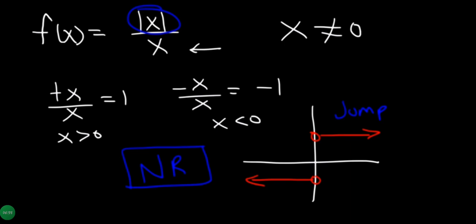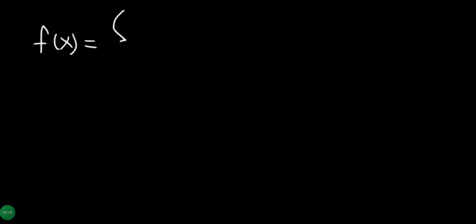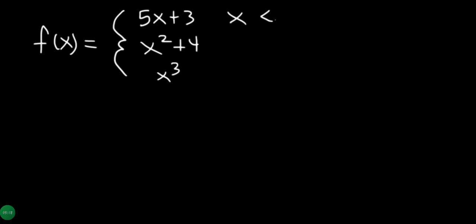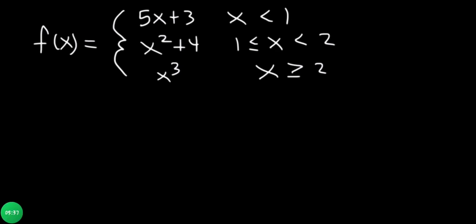The whole discontinuity is removable. Now f(x) equals 5x plus 3 over x squared plus 4, defined piecewise with x less than 0, less than 1, and x greater than or equal to 2.